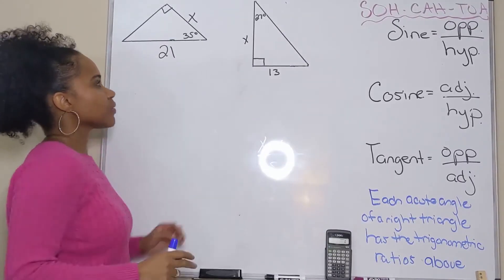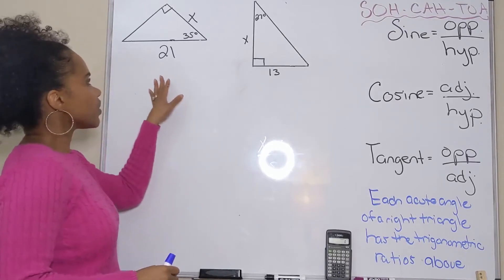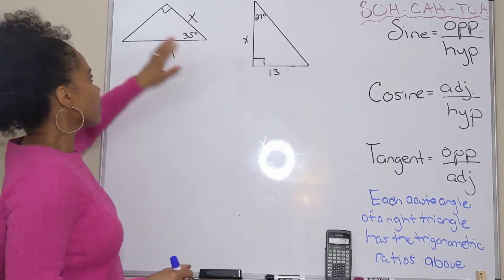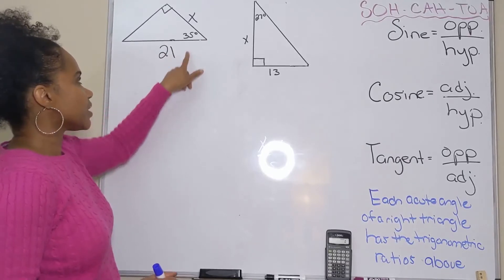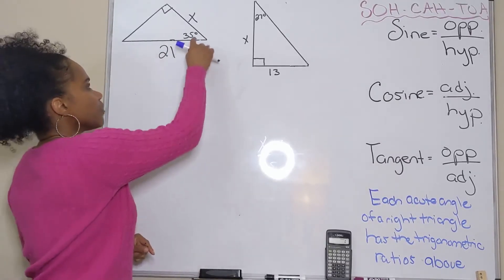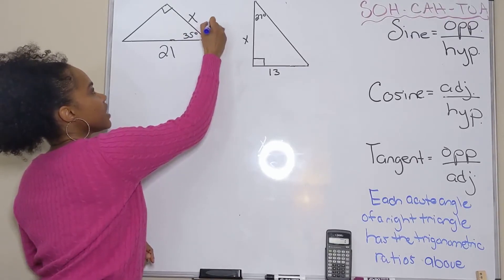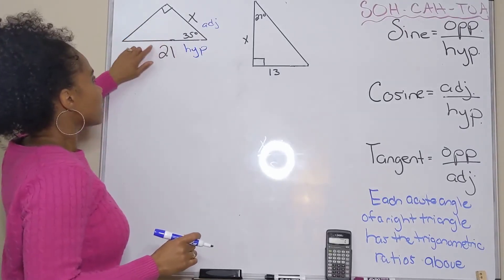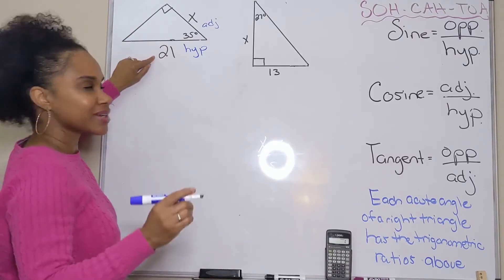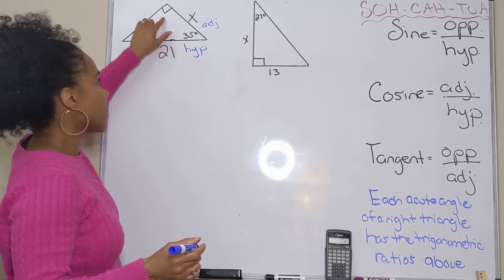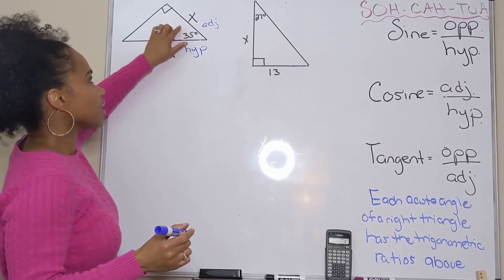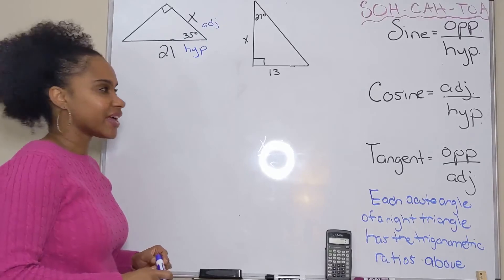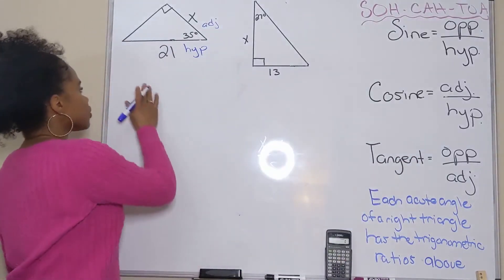Now we have two more triangles. This first one has an angle of 35 degrees and a side length of 21. In reference to the 35-degree angle, we have the adjacent side and the hypotenuse — remember, the side opposite the right angle is always the hypotenuse and takes precedence. With adjacent and hypotenuse, the trig function to use is cosine.